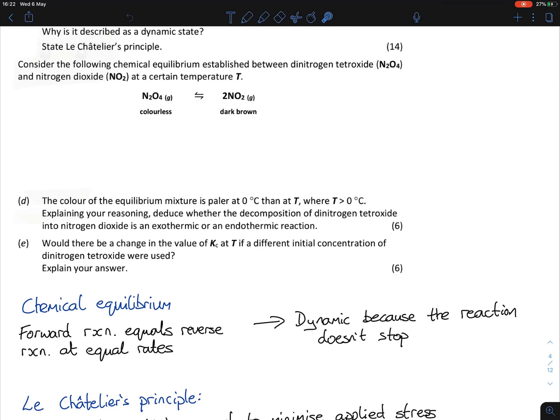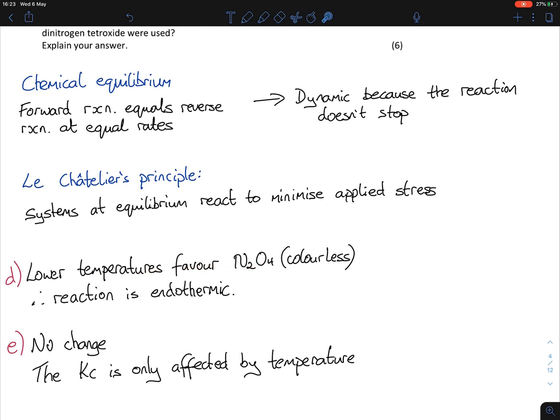Part D: You're given a reaction and told the color of the equilibrium mixture is paler at 0 degrees Celsius than at T, where T is greater than 0 degrees. Let's imagine T to be 25 degrees Celsius. The color is paler at zero degrees, which means by decreasing the temperature it drives the reaction towards the reactant side. Explain your reasoning: deduce whether the decomposition of dinitrogen tetroxide into nitrogen dioxide is exothermic or endothermic.